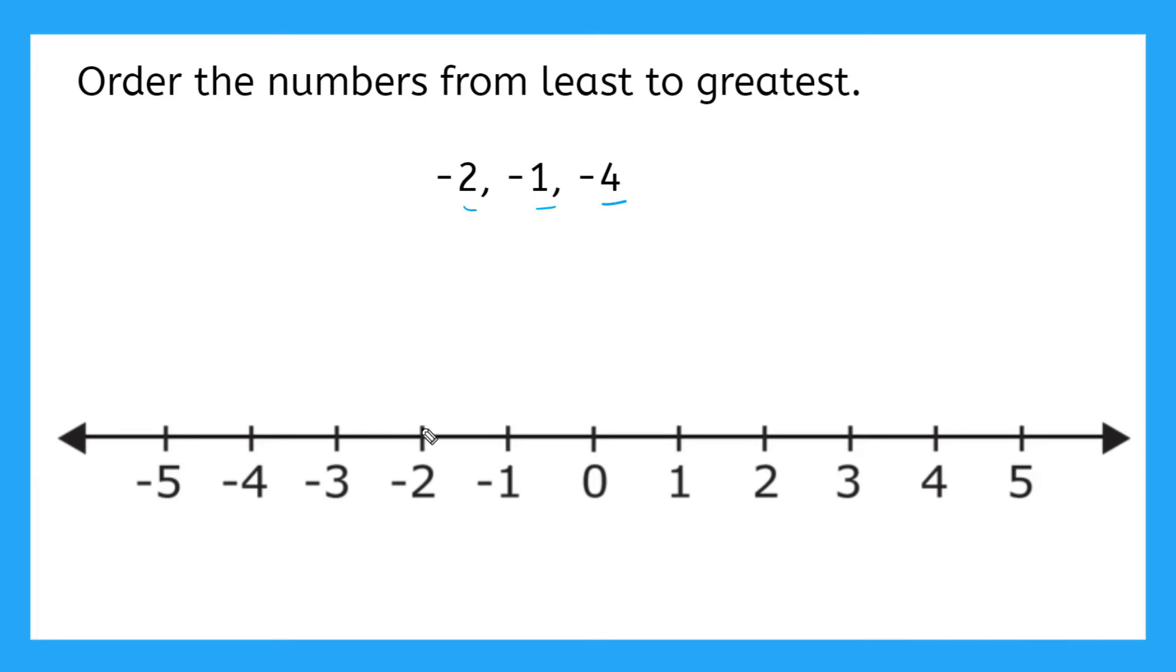Well, if I have negative two right here, and I have negative one right here, and negative four is over here, I can see which one of these numbers is closest to zero. Yeah, that's right. Negative one is the closest to zero.